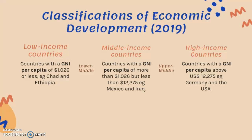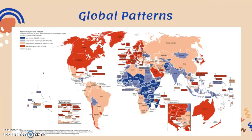Here's a diagram from the World Bank in 2017 showing global patterns of economic development. The high-income countries include the US, Canada, most of Western and Central Europe, Australia, Saudi Arabia, and Japan. The upper-middle income countries are shown in light orange and include China, Libya, Brazil, and Mexico.